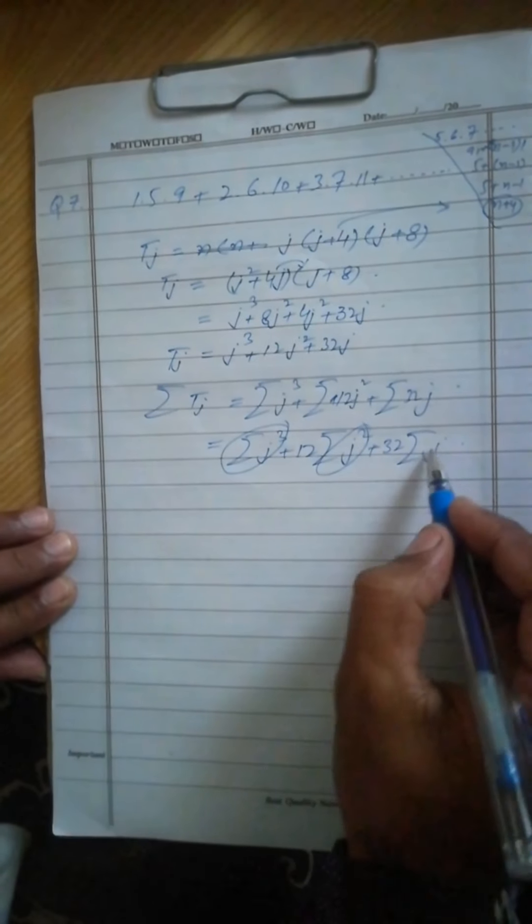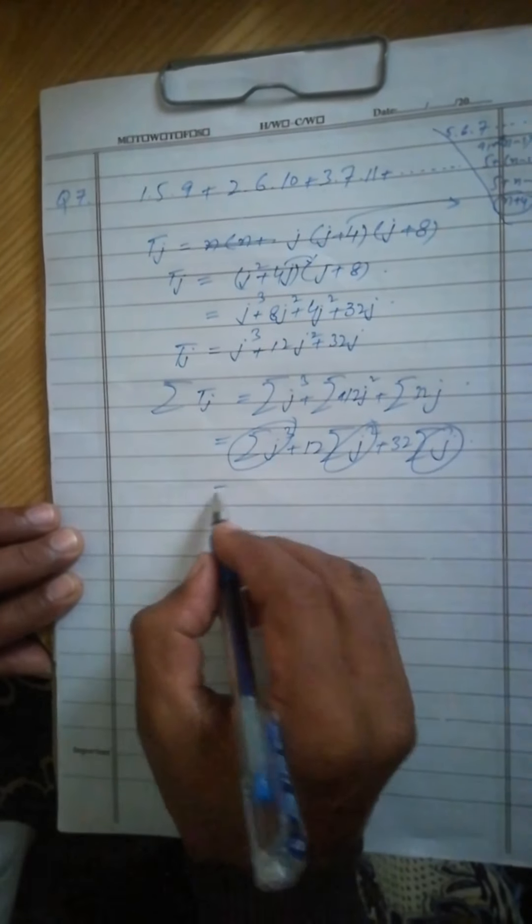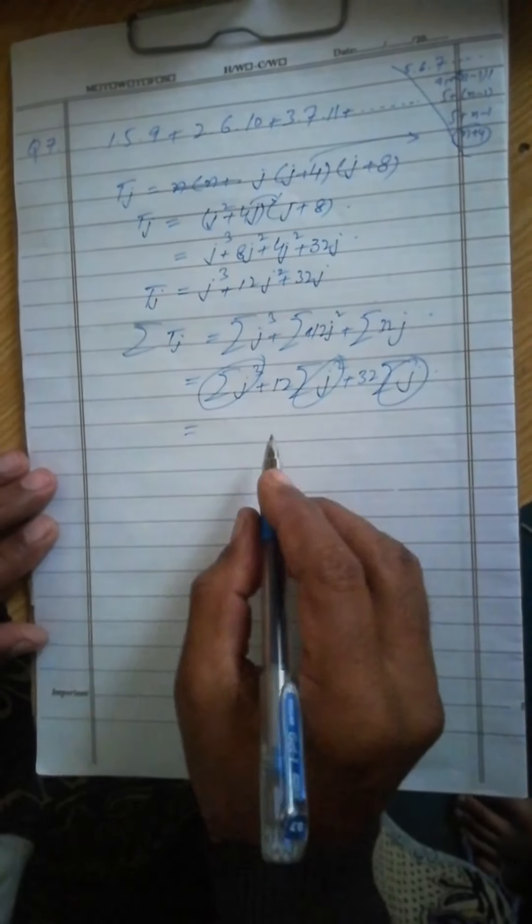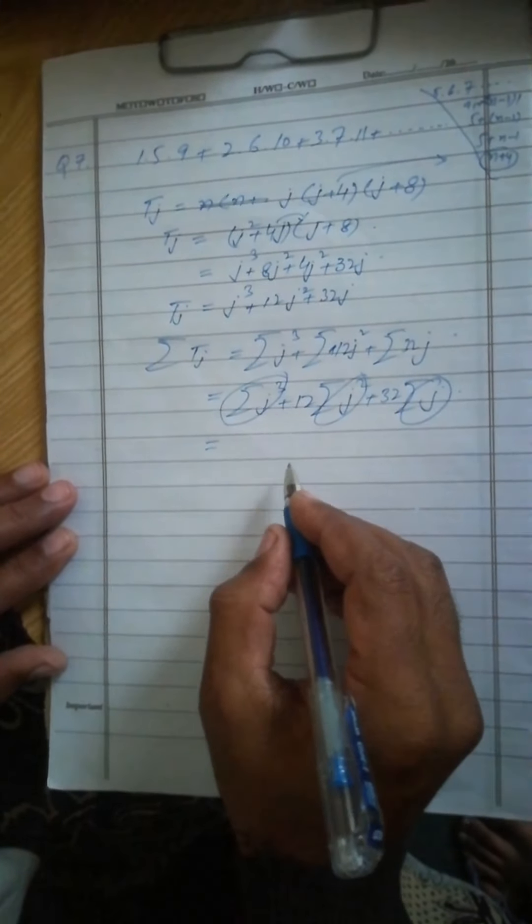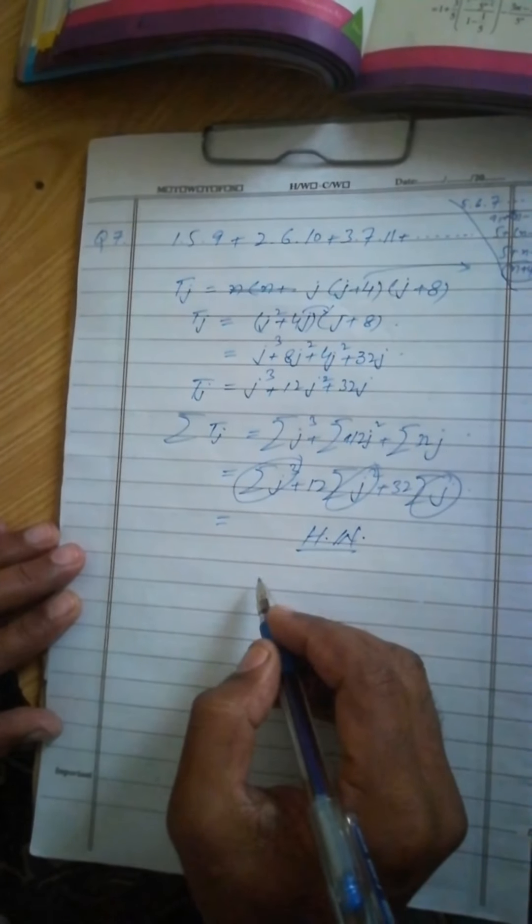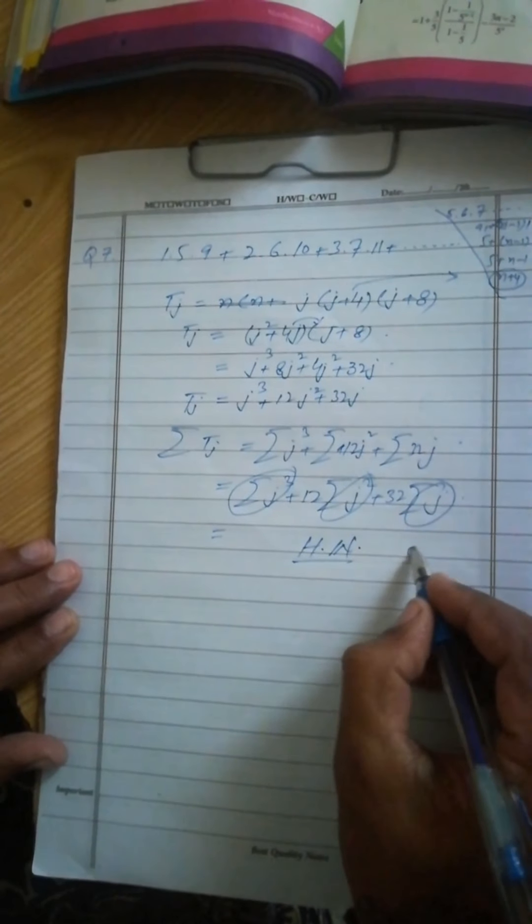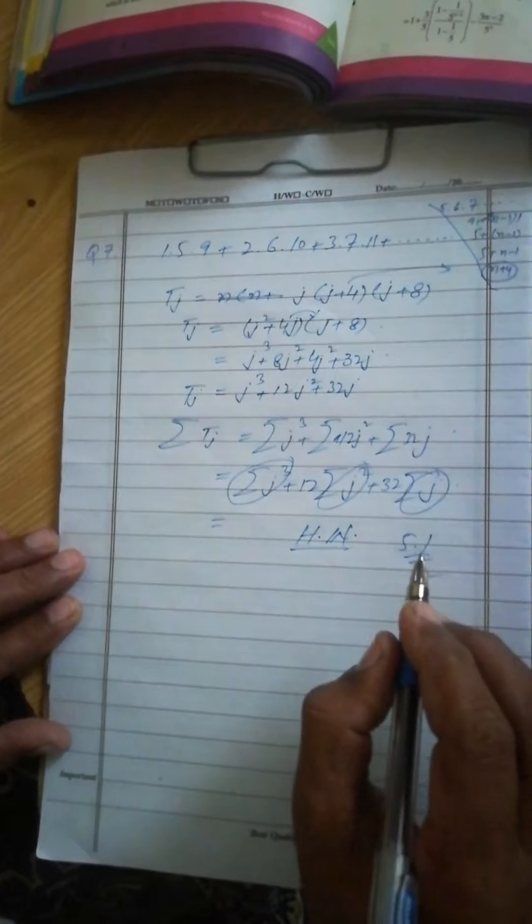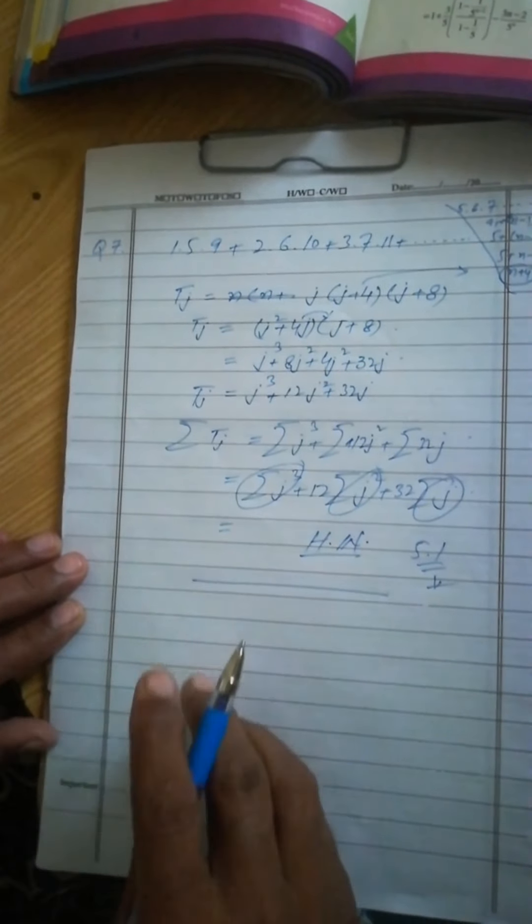j³ we have the formula, j² also we have, j also we have. Put all the values and simplify it, and you will get the sum of the series. So this is homework as well. The rest of the questions in this exercise 5.1, all the rest questions are homework. Do it on your own. Thank you.